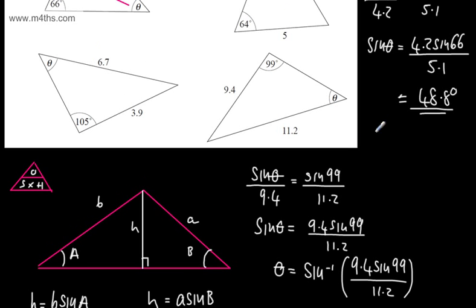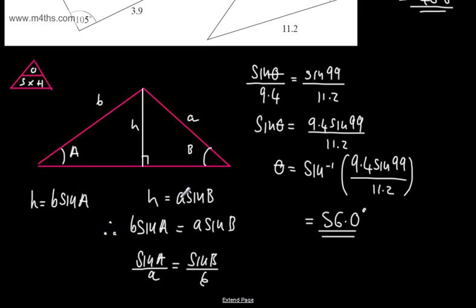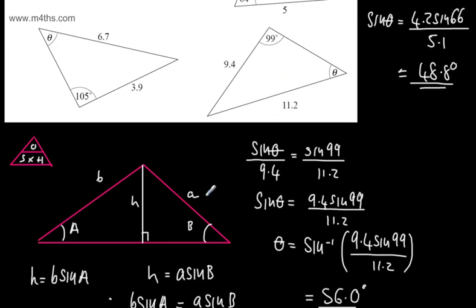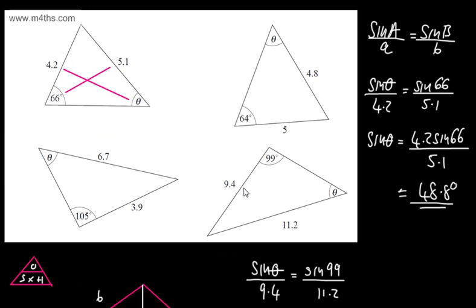We were only really doing basic examples, but hopefully that gives you some idea of exactly why you're using that. So there we go — that's an introduction to using the sine rule to find missing lengths and angles in non-right-angle triangles.